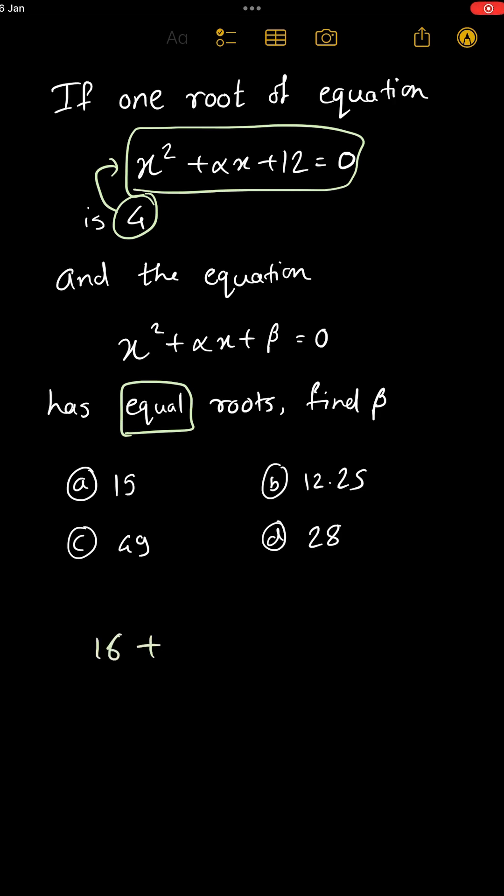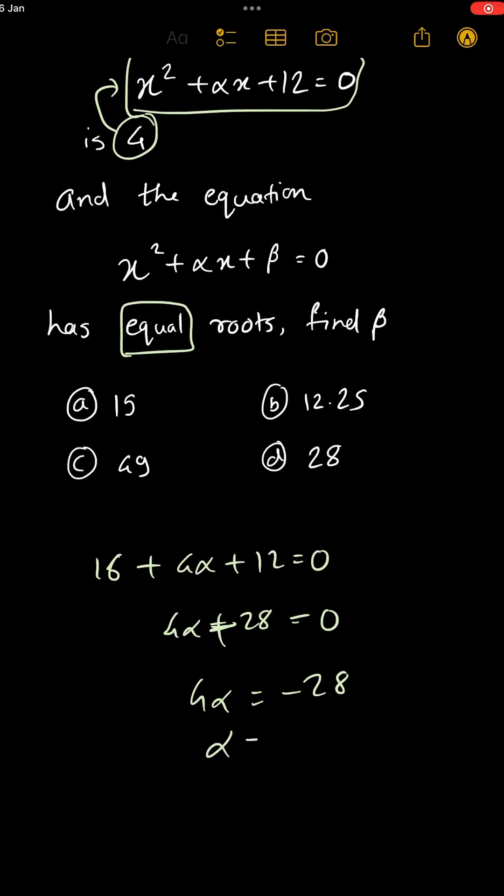4² = 16, plus α into 4, that is 4α plus 12 equals 0. That means 4α + 28 = 0. That means 4α = -28. Therefore, α = -7.